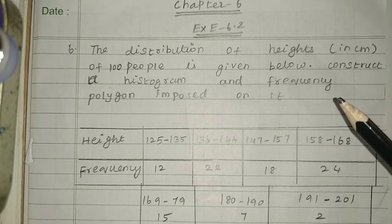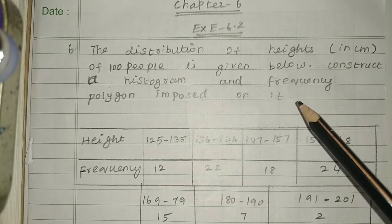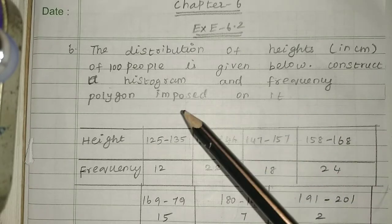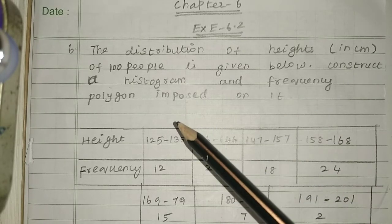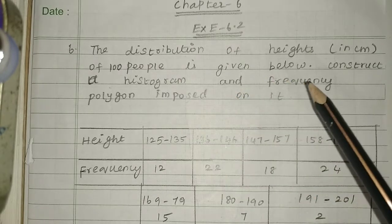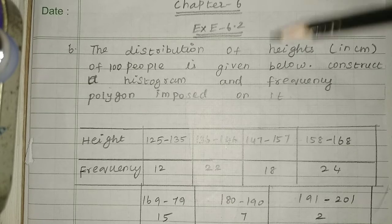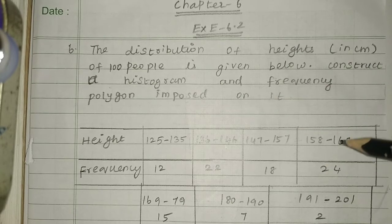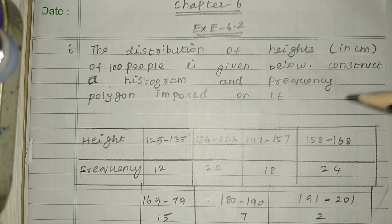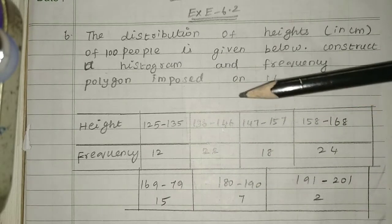What we need to do here is draw the frequency polygon. First draw the histogram, then on top of it draw the frequency polygon. This sum is a bit different from the previous sum — there will be more calculations, so be careful. Heights are given as the frequency here.